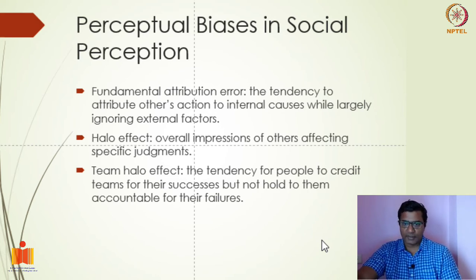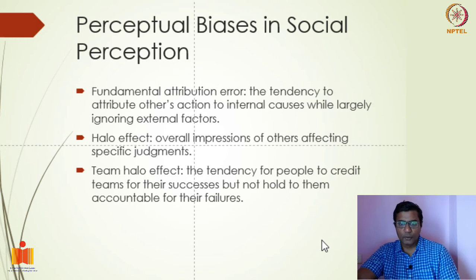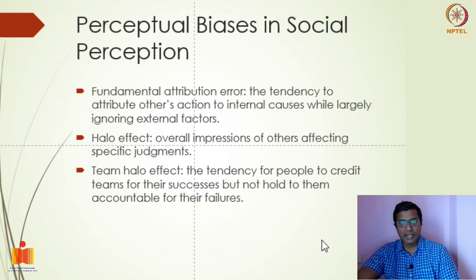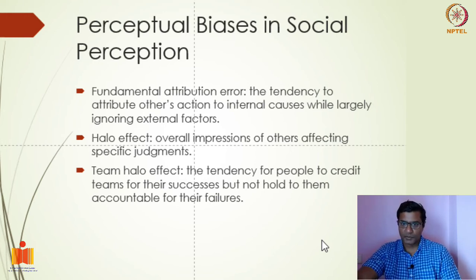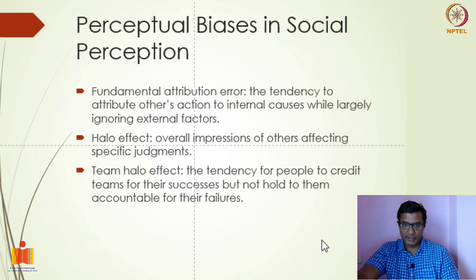There is also a team halo effect, which means teams — especially teams supposed to be very good — get success attributed to them, and if they fail, it is attributed to external reasons. For example, if you love your cricket team like CSK — Chennai Super Kings — whenever they succeed, you think they played well. But when they fail, you say the umpiring was not good. That is what team halo effect is.